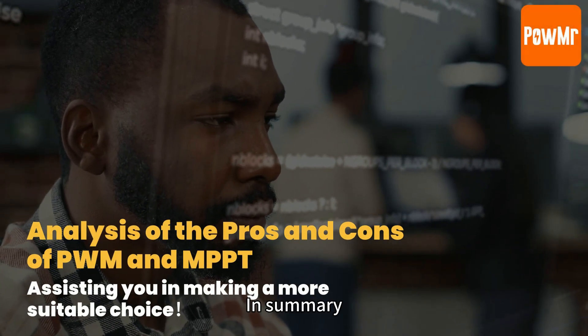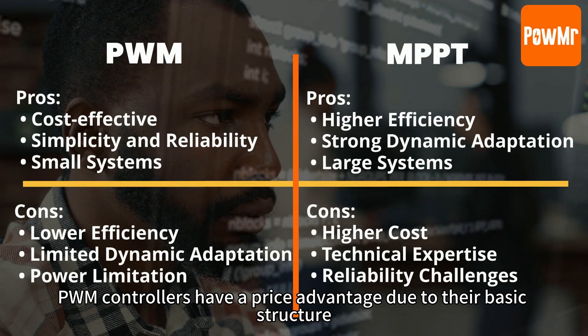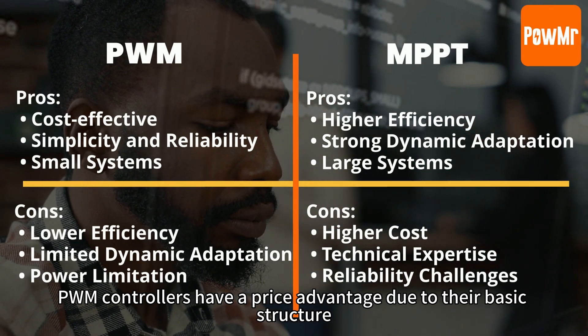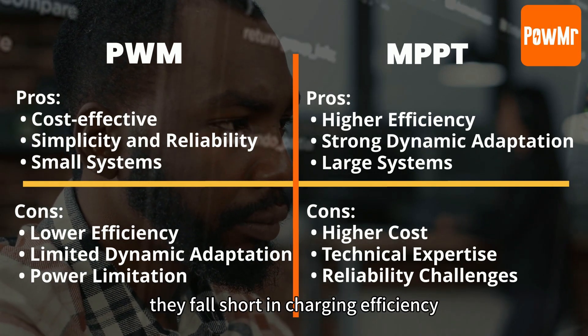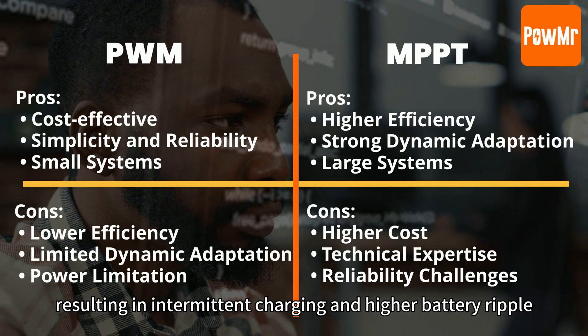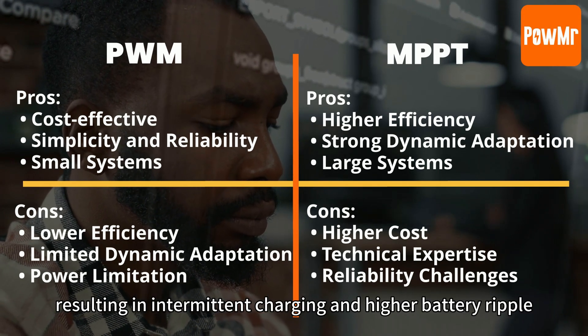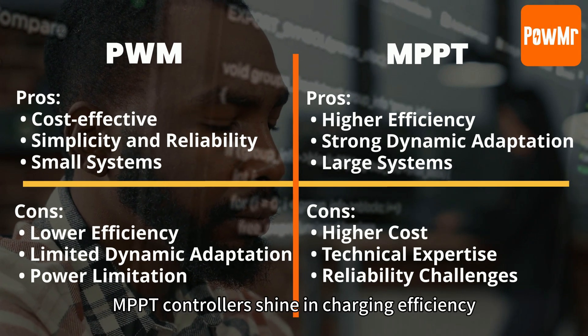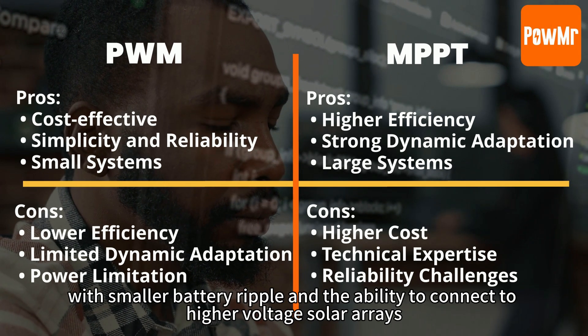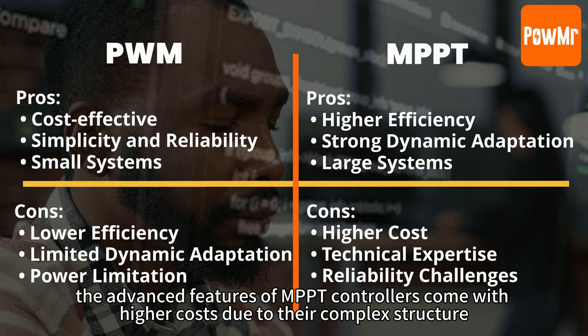In summary, PWM controllers have a price advantage due to their basic structure, leading to lower costs. However, they fall short in charging efficiency, resulting in intermittent charging and higher battery ripple. MPPT controllers shine in charging efficiency, with smaller battery ripple and the ability to connect to higher voltage solar arrays. However, the advanced features of MPPT controllers come with a higher cost due to their complex structure.